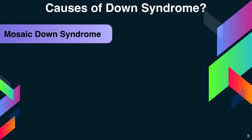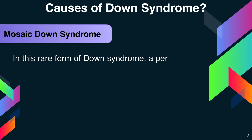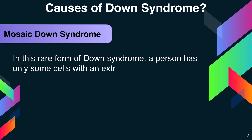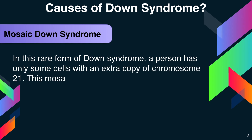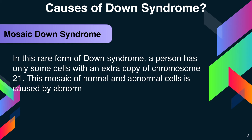The second is Mosaic Down syndrome. In this rare form of Down syndrome, a person has only some cells with an extra copy of chromosome 21. This mosaic of normal and abnormal cells is caused by abnormal cell division after fertilization.